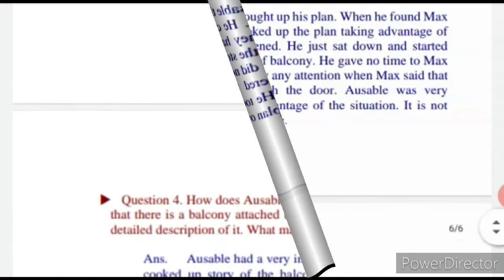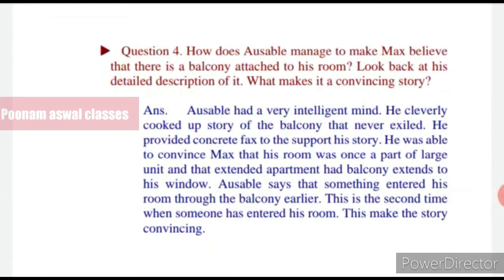Question number four: How does Ausable manage to make Max believe that there is a balcony attached to his room? Answer: Ausable had a very intelligent mind. He cleverly cooked up a story about a balcony that never existed. Usne chalaki se Max ke liye ek kahaani banai ki uske kamre ke saath ek balcony hai.